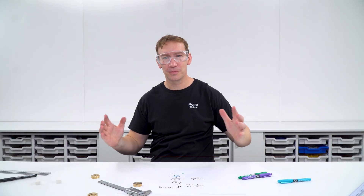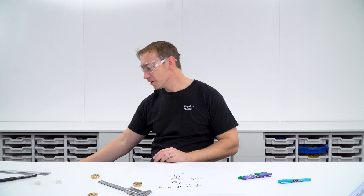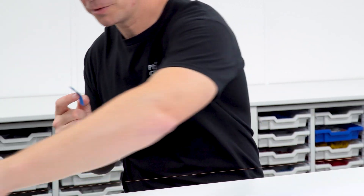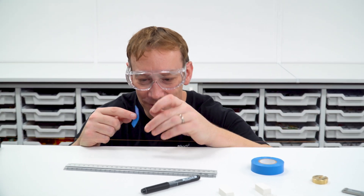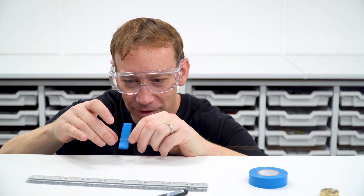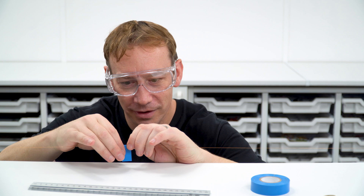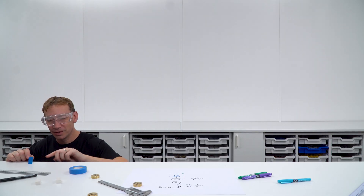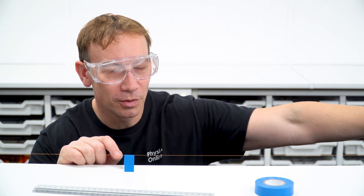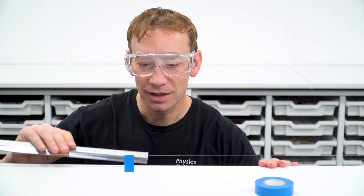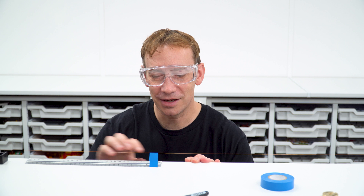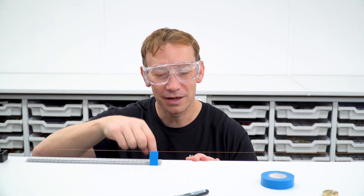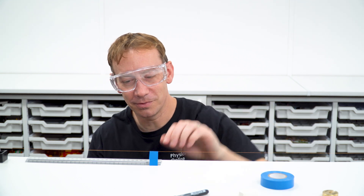I've moved the blocks further back to get the longest wire possible. I'll add a piece of electrical tape to mark the start point from which we'll measure the extension. The tape hangs down vertically, and we use a meter ruler to measure from that point back to the start of the wire — that gives us our starting length. A ruler placed on the desk is used to measure the extension.